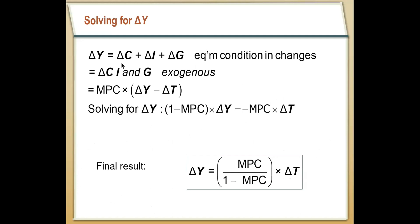We can find the taxation multiplier by doing basically the same thing as before. Solving for ΔY, we start with the equilibrium condition: the change in Y equals the change in the components of Y. In this case, government spending and investment do not change — the only thing taxes can influence is consumption. So ΔY equals ΔC, and ΔC equals MPC times the change in income minus the change in taxes. Solving this, the change in taxes increases total consumption, which increases income, and when income goes up consumption goes up. The result is ΔY over ΔT equals negative MPC over one minus MPC.